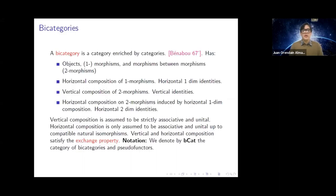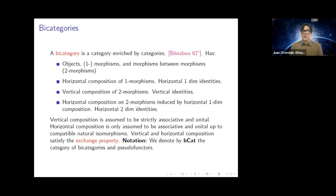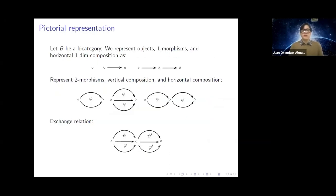A bicategory is a category enriched by categories. The concept was introduced by Bénabou in 1967. A bicategory has objects, morphisms which we call one-morphisms, and morphisms between morphisms which we call two-morphisms. It also has a horizontal composition operation for one-morphisms, a vertical composition operation for two-morphisms, and a second horizontal composition for two-morphisms, each with a corresponding identity. Vertical composition is strictly associative and unital, while horizontal composition is only associative and unital up to compatible natural isomorphisms. Vertical and horizontal compositions satisfy the exchange property. We denote by BCat the category of bicategories and pseudofunctors. We'll use the usual globular pictorial representation for bicategories.